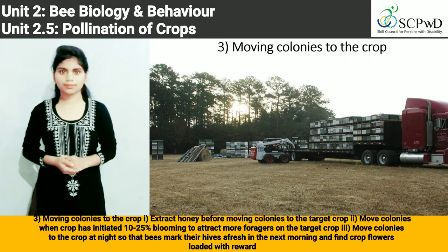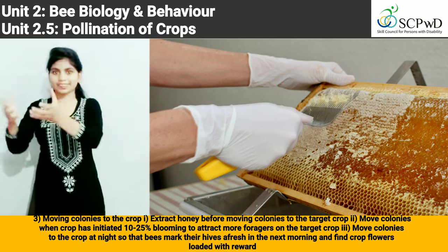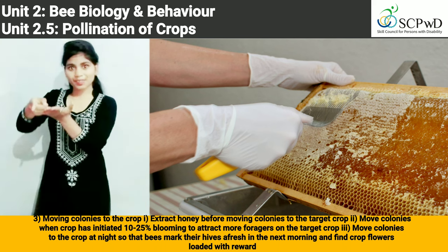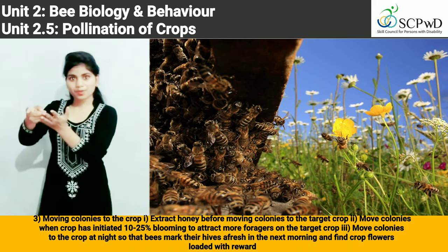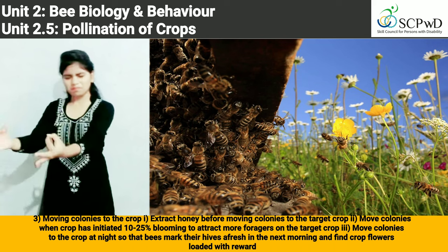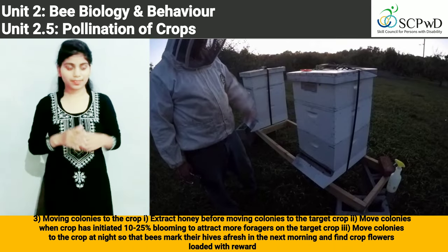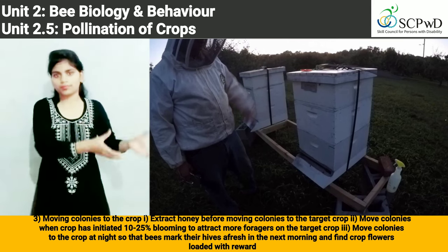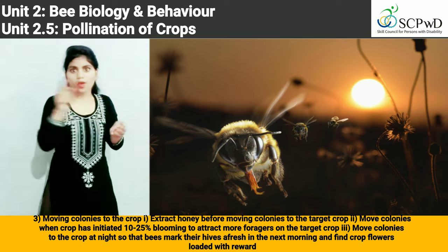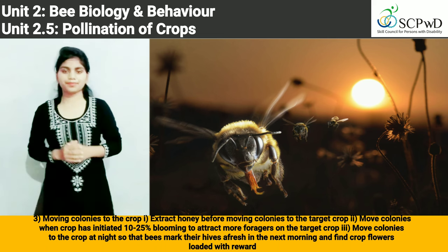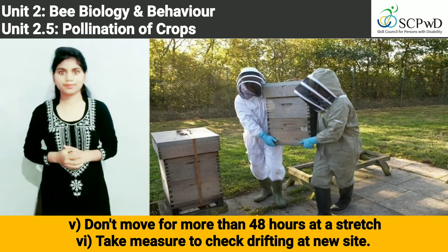Number 3: Moving colonies to the crop. First, extract honey before moving colonies to the target crop. Second, move colonies when the crop has initiated 10–25% blooming to attract more foragers to the target crop. Third, move colonies to the crop at night so that bees mark their hives afresh the next morning and find flowers loaded with reward. Fourth, save colonies from heating up. Fifth, do not move for more than 48 hours at a stretch.